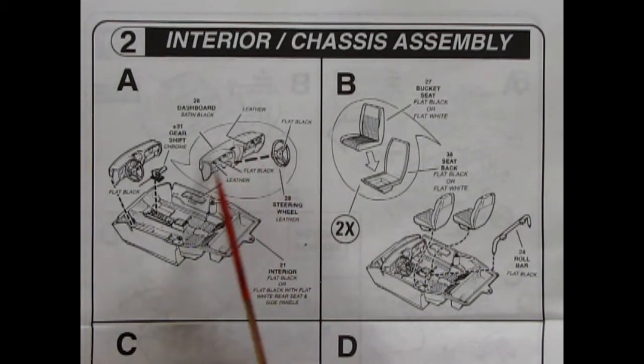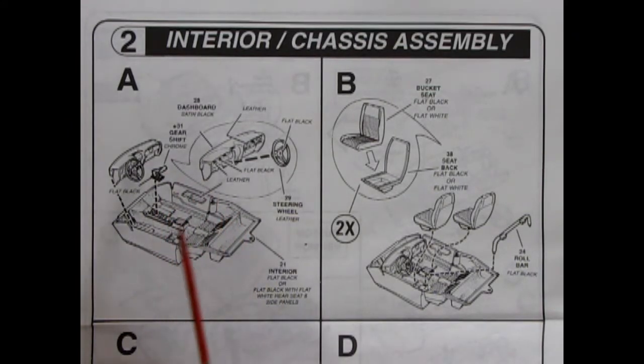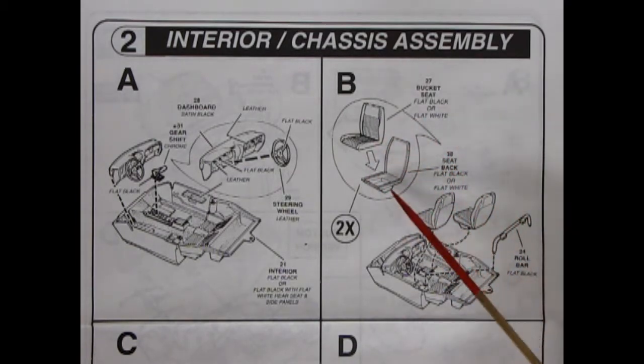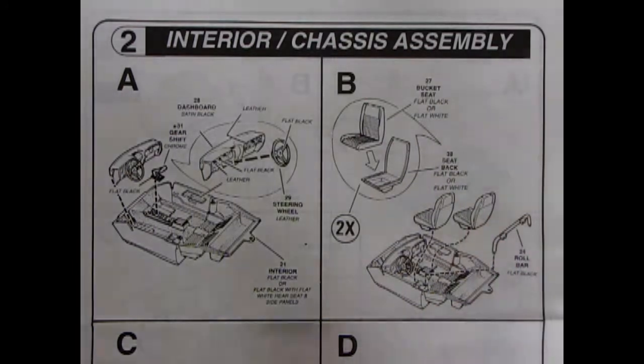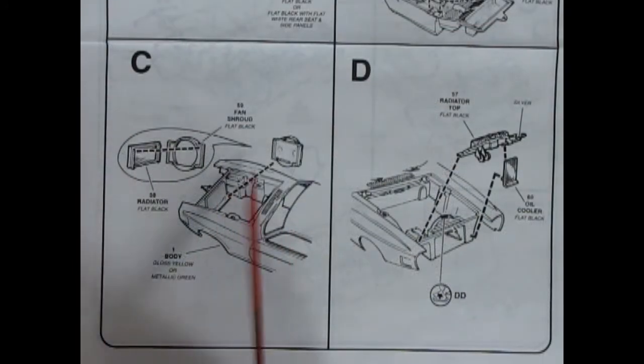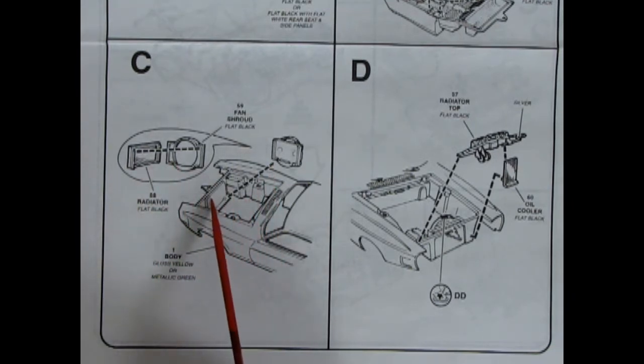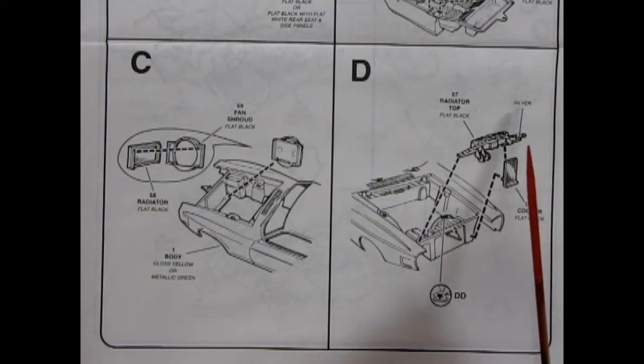Step two is our interior chassis assembly. Here we have our dashboard and steering wheel gluing on. And then our gear shift. And all this pops into an interior bucket. Which is kind of sad. It would be nice to have more individual pieces. However, this is a very nice bucket in here. Then we're getting our bucket seats gluing together, tops and bottoms. And there's a little roll bar that pops in. So there we get our interior all together. Panels C and D show our two-piece radiator going together. The radiator and the radiator shroud. And all this glues into our front panel. And then we also get our radiator top and a little oil cooler. Which will glue on for the front of the car.